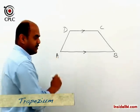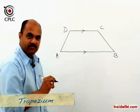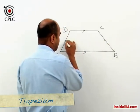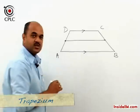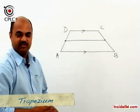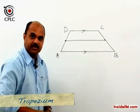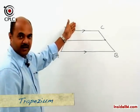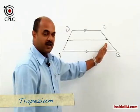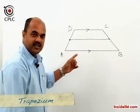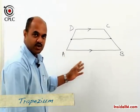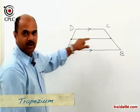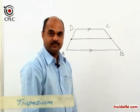In a trapezium, the median is formed by joining the midpoints of the oblique sides. To summarize the properties of a trapezium: one pair of opposite sides is parallel, the other pair is not parallel and is called oblique. If the oblique sides are equal, it is an isosceles trapezium. The median is the line joining the midpoints of the oblique sides.